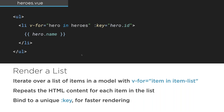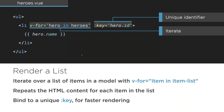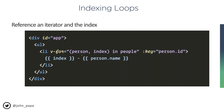Here we have v-for going through a heroes array — 'v-for="hero in heroes" :key="hero.id"' — and render hero.name to show 'Madeline'. You can also get the index by using the syntax 'v-for="(person, index) in people"' with parentheses, which lets you access a numeric index to display next to each name.